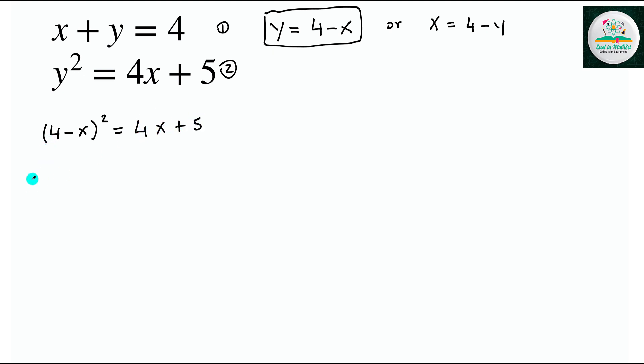We expand this bracket, so I will get 16 minus 8x plus x squared, which is equal to 4x plus 5.